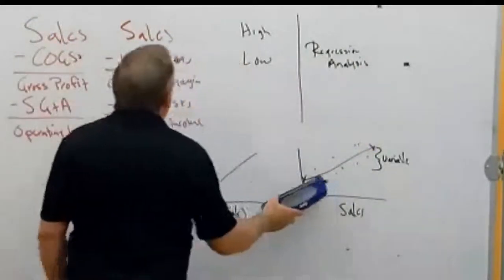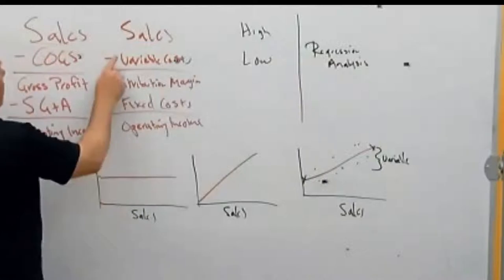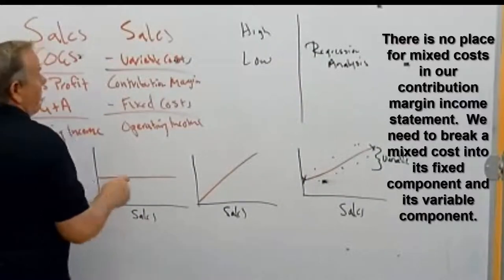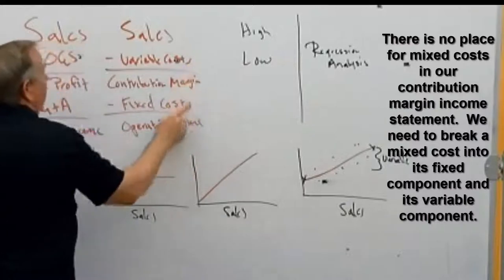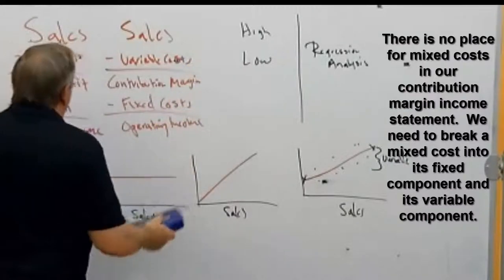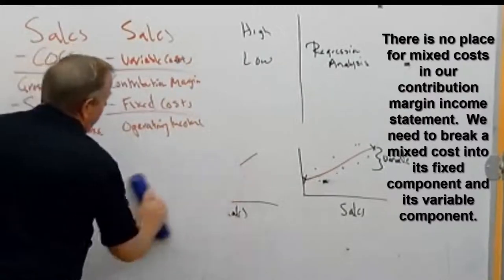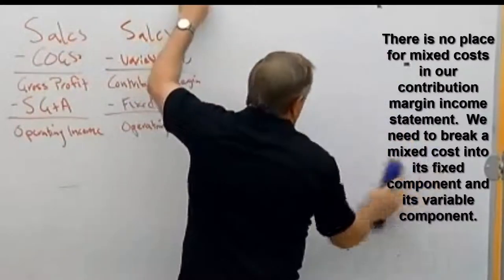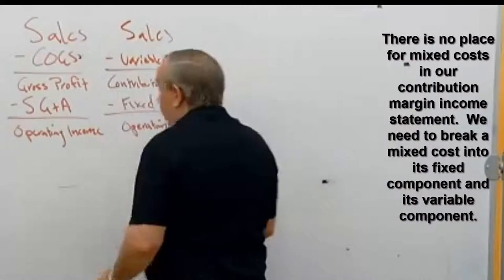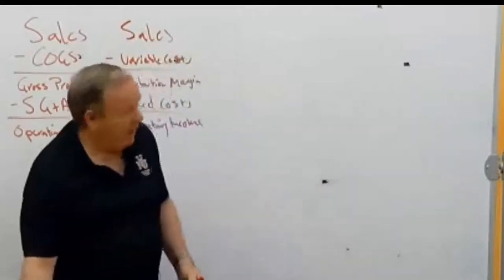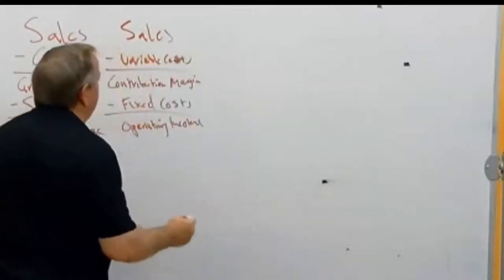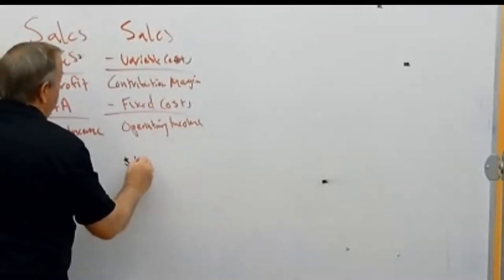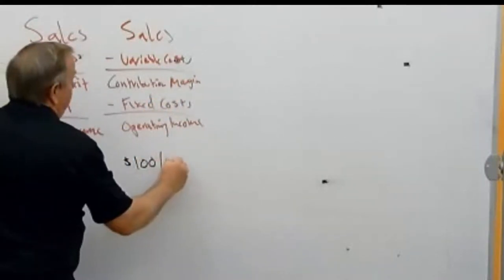We need to separate mixed costs into fixed and variable because our CVP format has no place for mixed costs — the variable portion goes in variable costs and the fixed portion goes in fixed costs. To illustrate the new system: in my wine store, rent is $100 per month, which is a fixed cost whether I sell one bottle or ten thousand bottles.